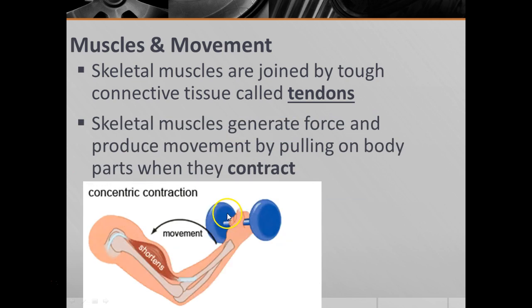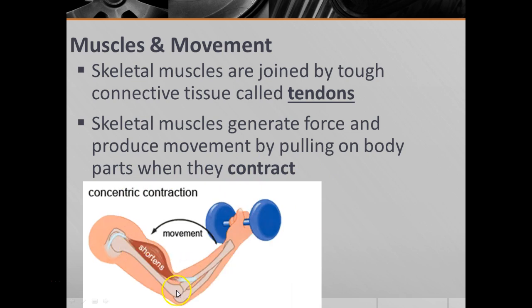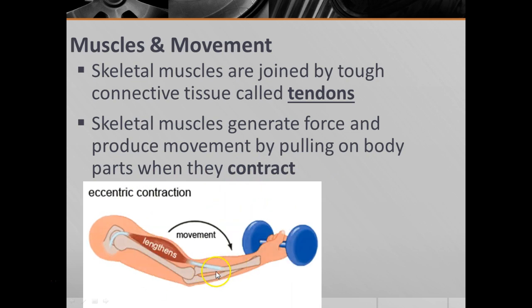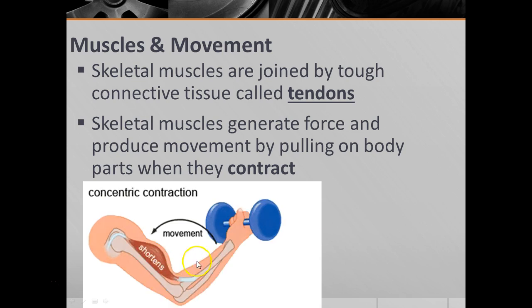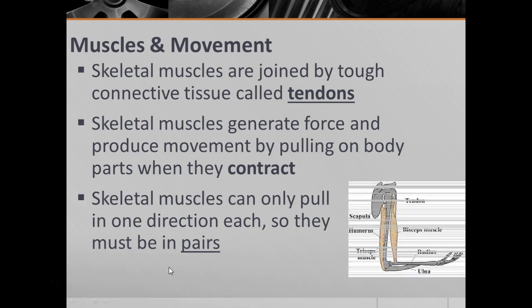Skeletal muscles are going to generate force by pulling on the body. When the bicep contracts, it's going to essentially shorten your arm. When the tricep contracts, it's going to be lengthening your arm. So it's contract, relax, contract, relax — the movement is generated by the shortening of the muscle fibers. Skeletal muscles can only pull in one direction each, so when you want movement in both directions — like extending and contracting the arm — they have to be in pairs. Your biceps causes it to contract; your triceps causes it to extend.